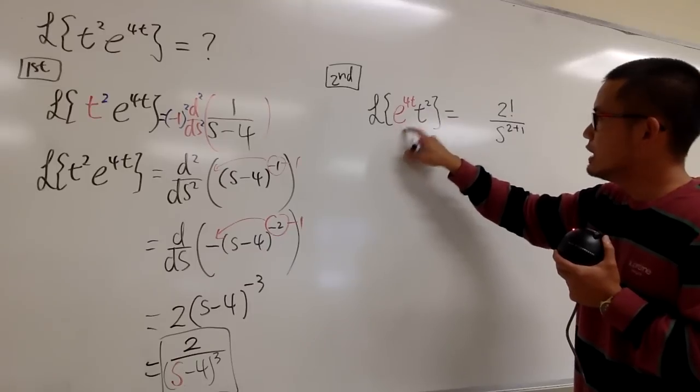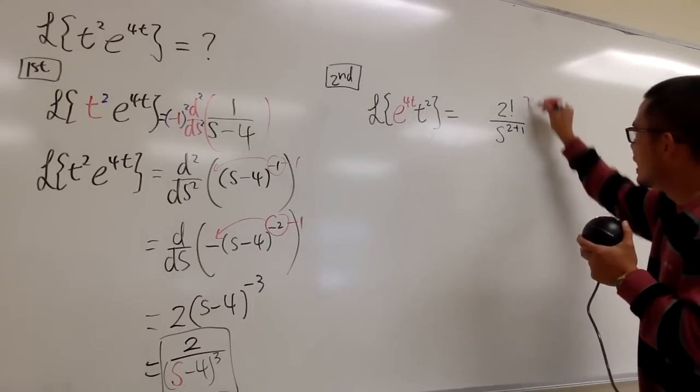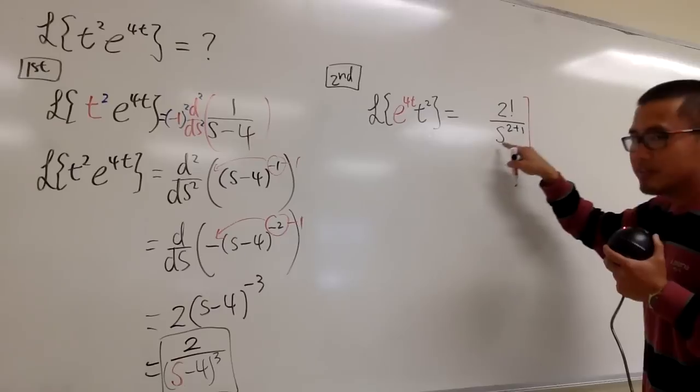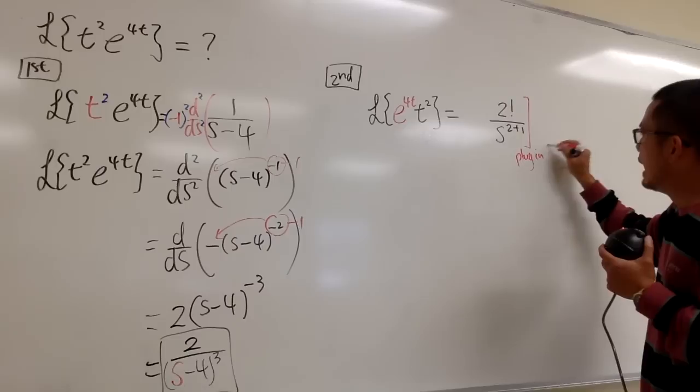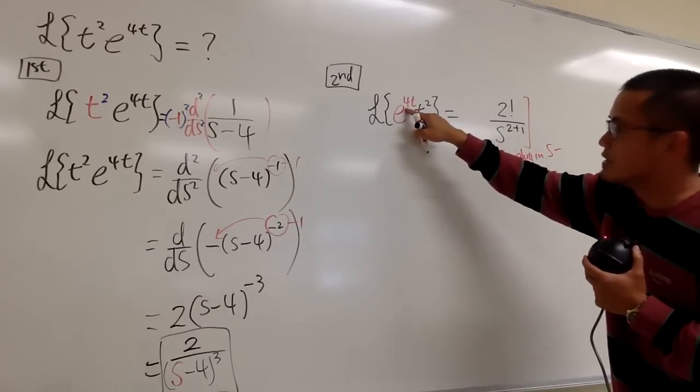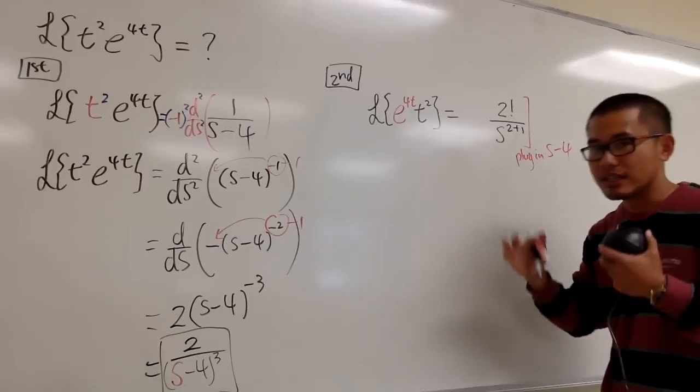Well, suppose the part in black is what we know already. Once you multiply the inside with e to the 4t, what do we have to do? All we have to do is, on the right-hand side, instead of s, you just have to plug in, let me just tell you, plug in s minus whichever this number is, which is 4. s minus 4. That's all we have to do.